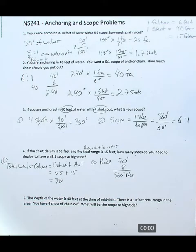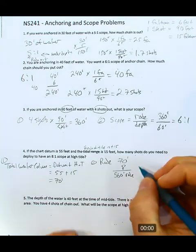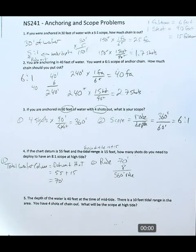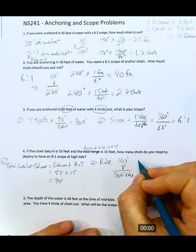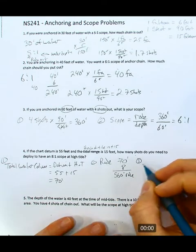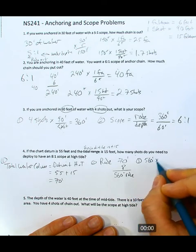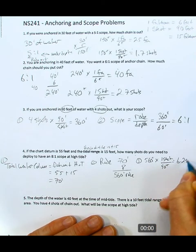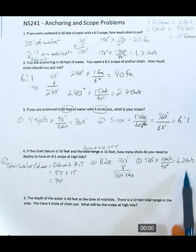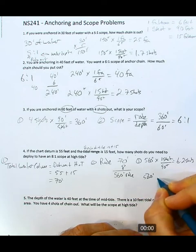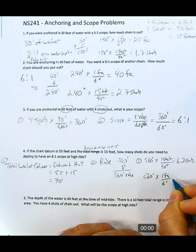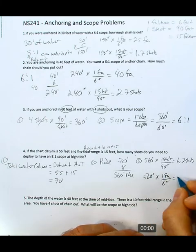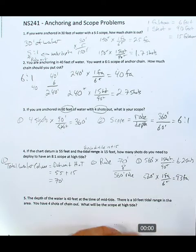We want an 8 to 1 scope at high tide, so: 70 feet times 8 equals 560 feet of rode. Converting to shots: 560 feet times 1 shot per 90 feet equals 6.2 shots — we'd say let out six and a half shots or a little more than six. Converting to fathoms: 560 feet times 1 fathom per 6 feet equals 93 fathoms. In practice you'd more likely give the command in shots.